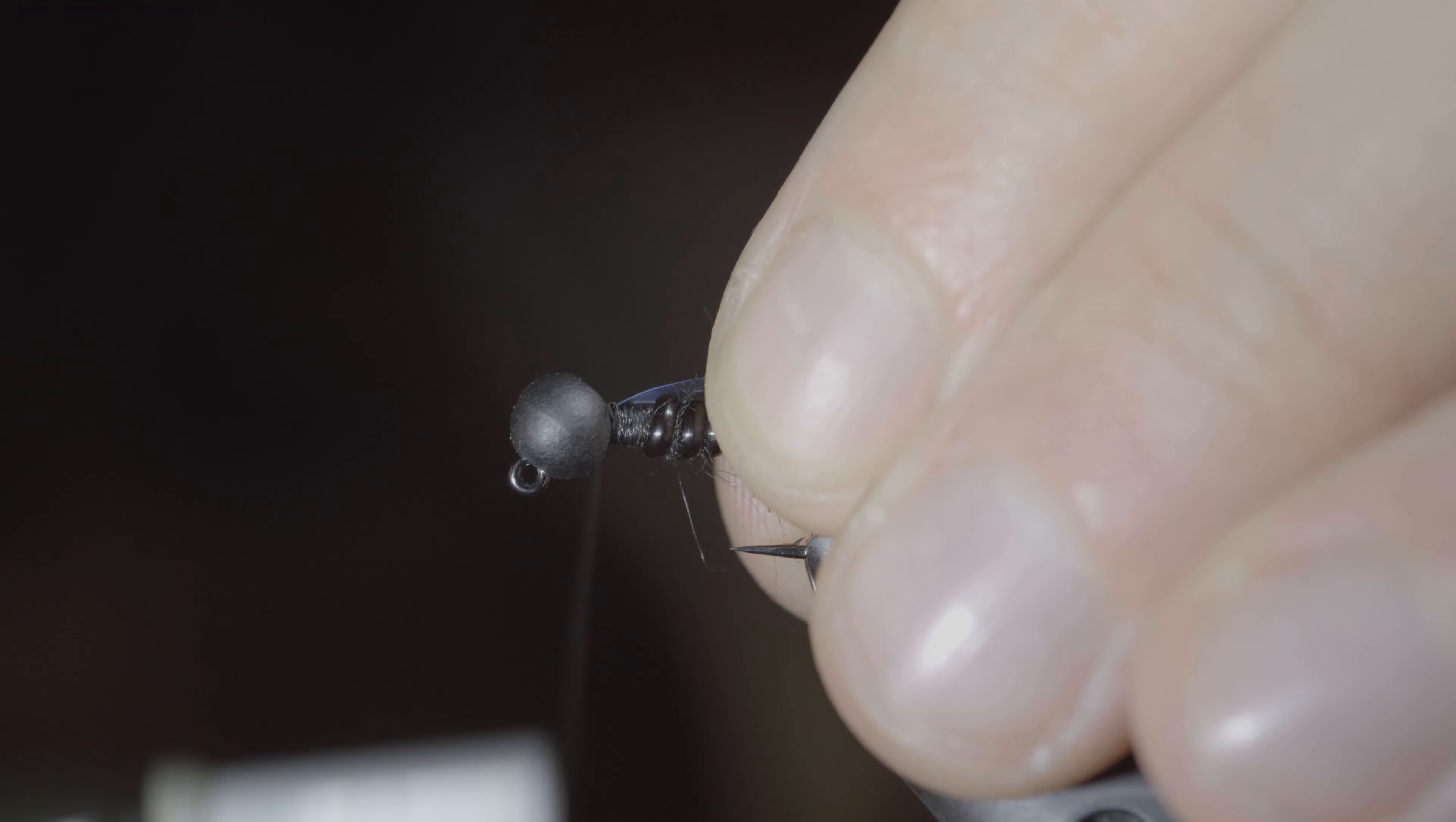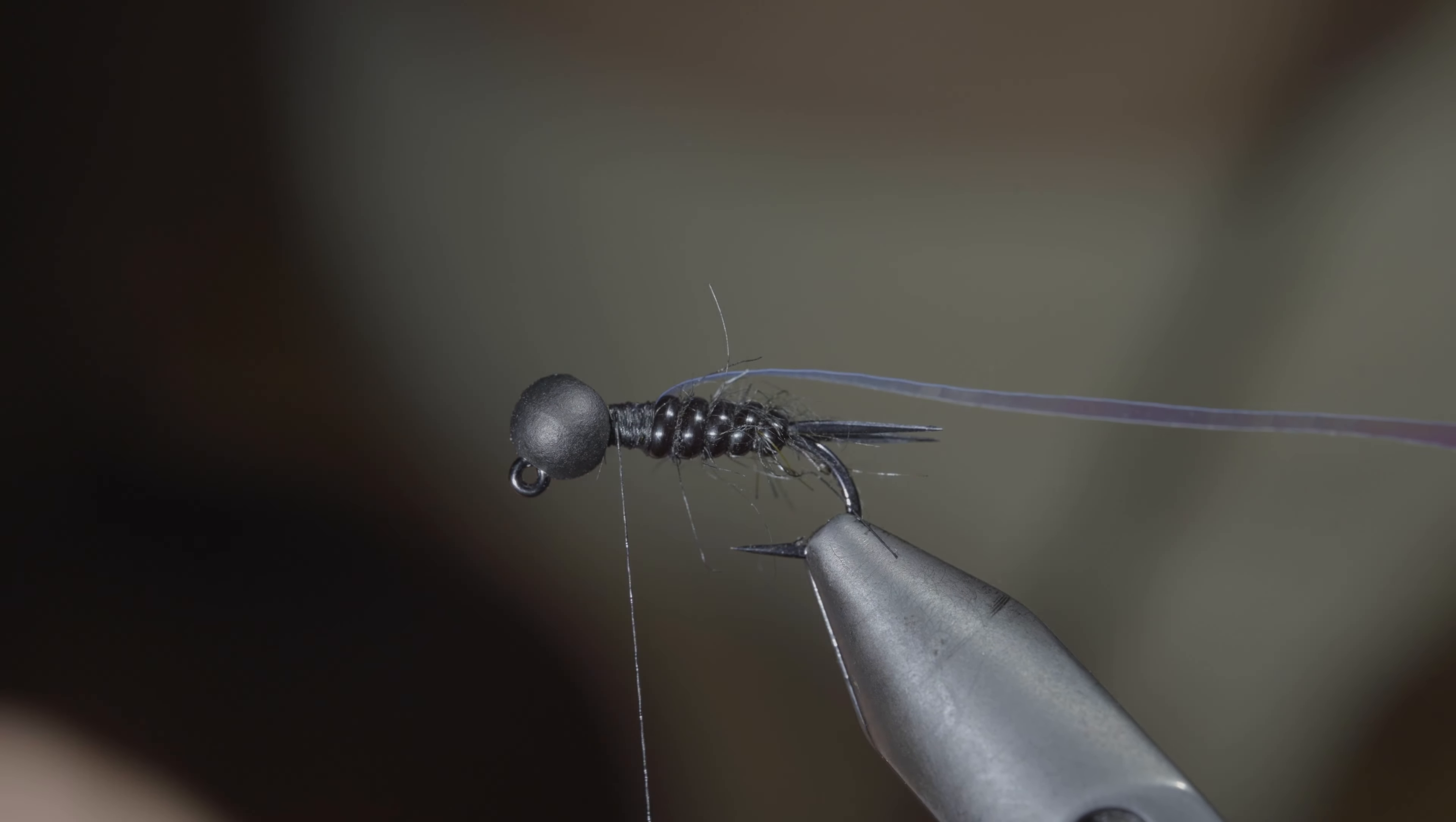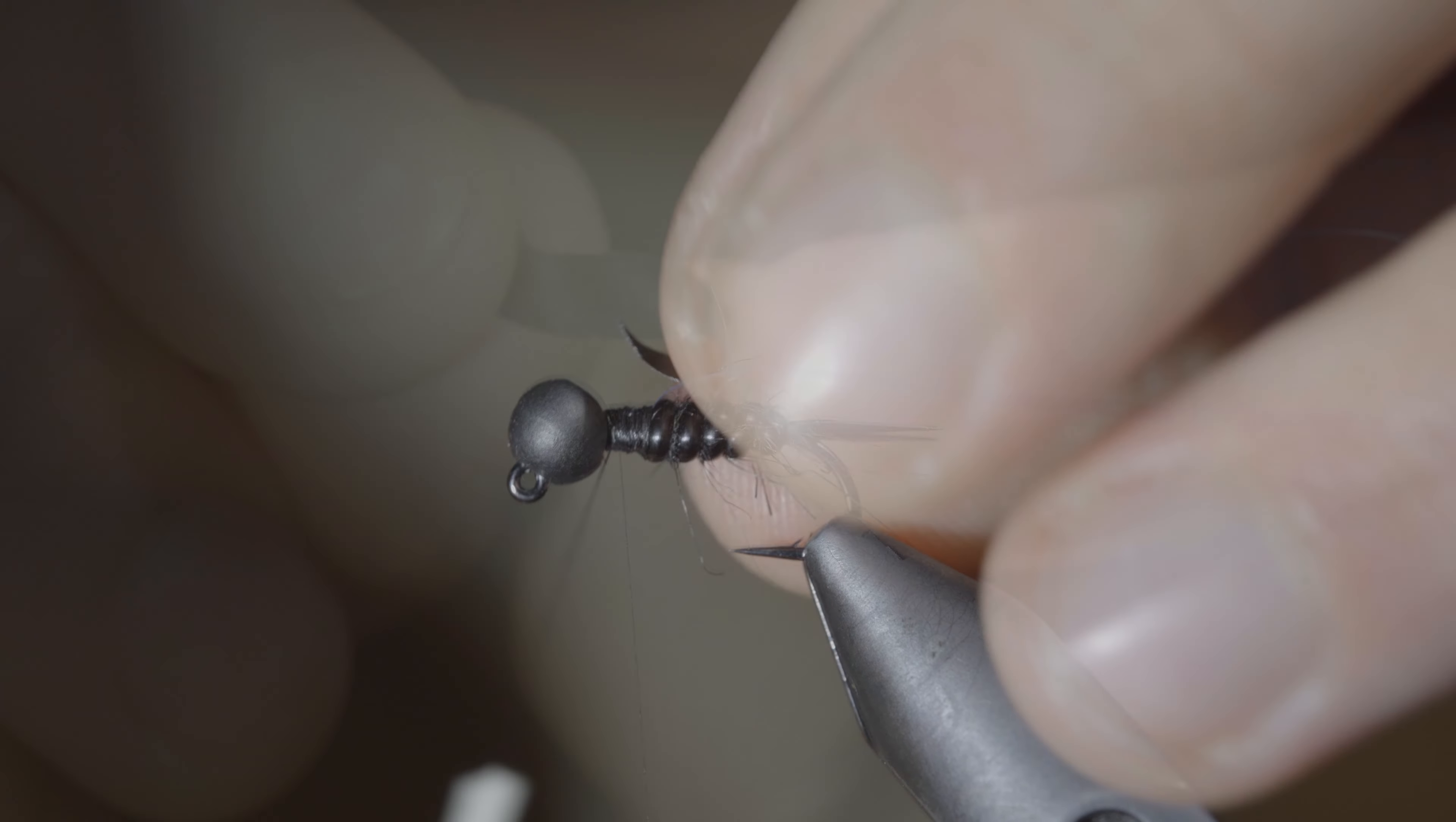We'll then grab some flash, here I'm using lateral scale, securing it to the top of our fly, wrapping back towards the start of our rib.